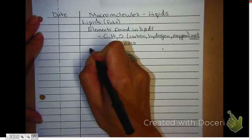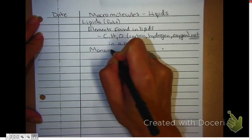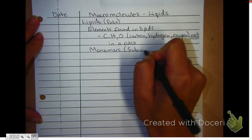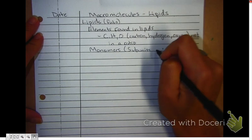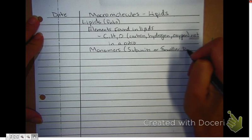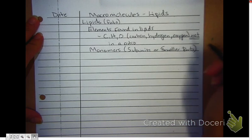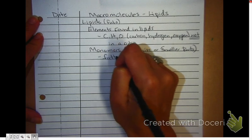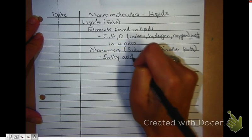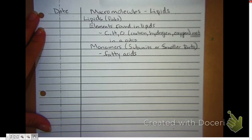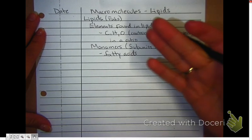The monomers, which are also called the subunits, or smaller parts, are called fatty acids. And these fatty acids are going to be making up the bigger lipids.